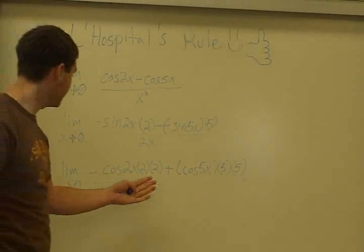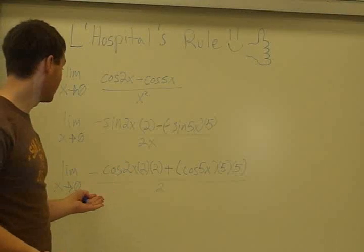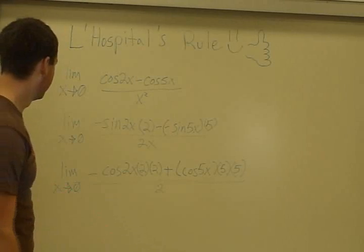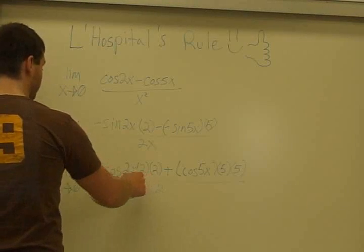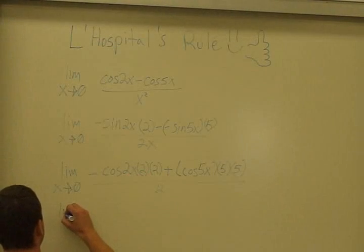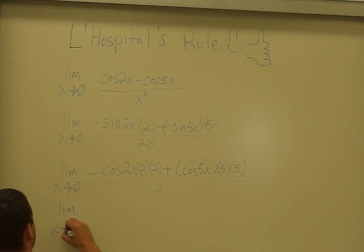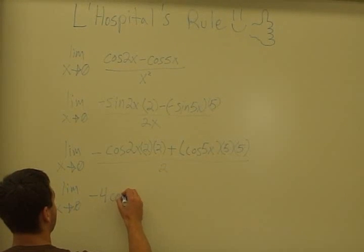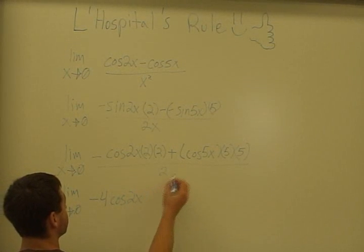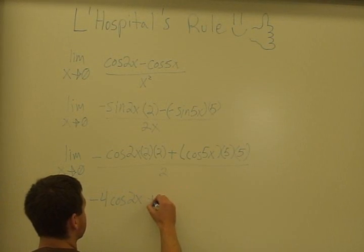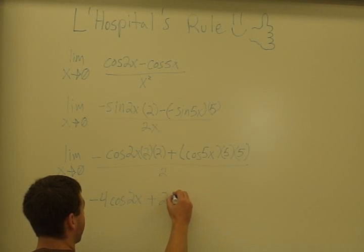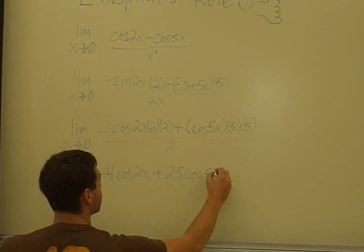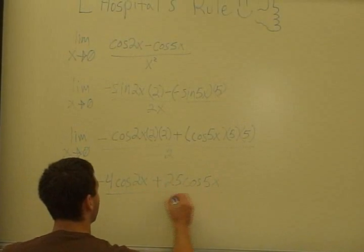So now we look at this and we have 2. The bottom, it's no longer going to be 0 in the denominator, so we can work with this here. What we're going to do is we're going to multiply this out. So we have the limit as x approaches 0, of negative 4 cosine 2x plus 5 times 5 is 25 cosine of 5x, and that will all be over 2.